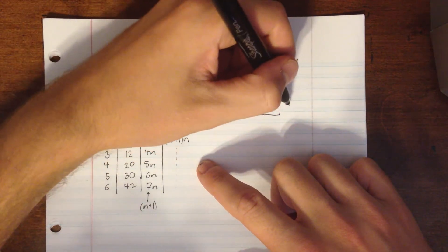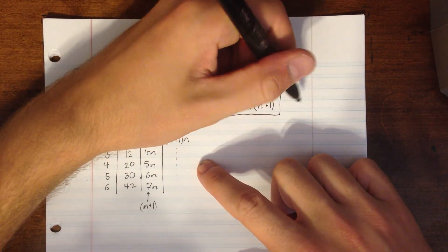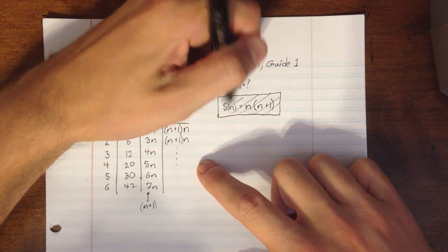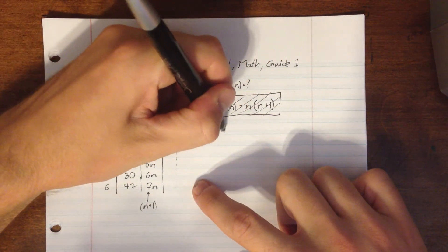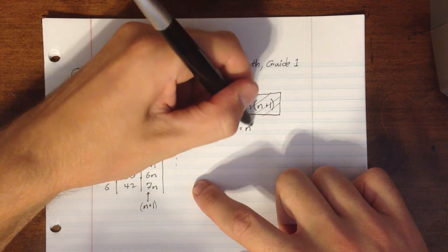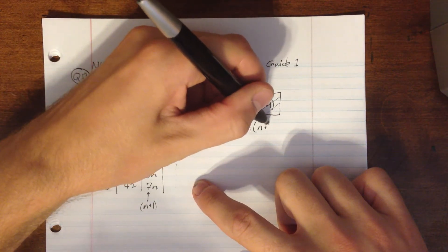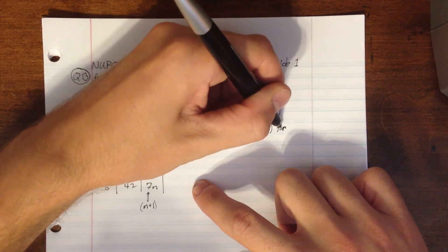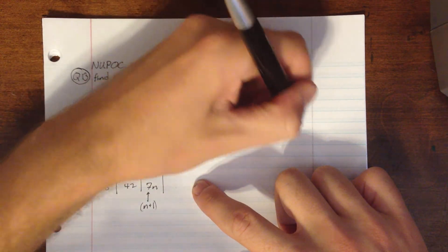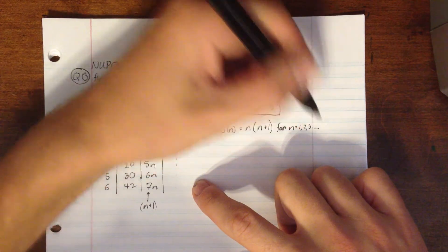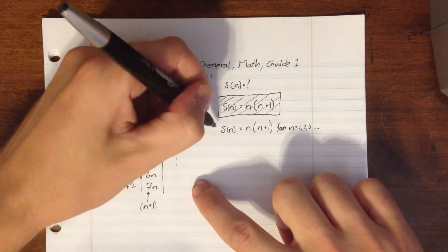And again, we should really write, just to be a little bit more rigorous, I'll write it all together in the same block. We should really say s of n equals n times n plus 1, for n equals 1, 2, 3, etc., indicating that it starts at 1.